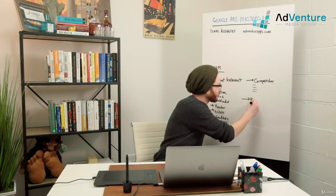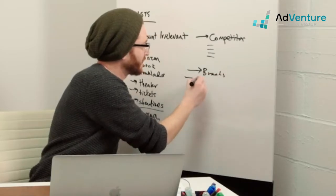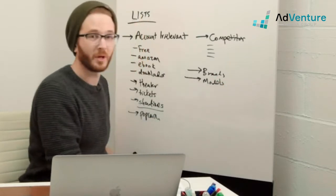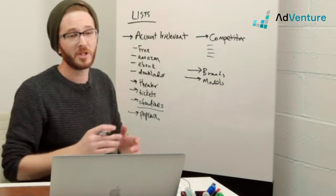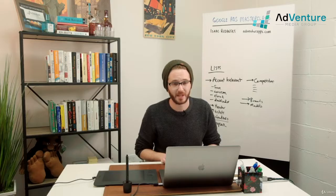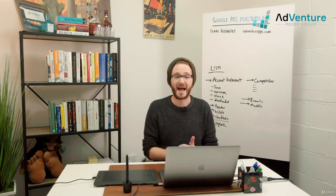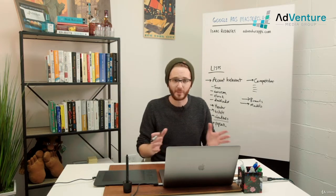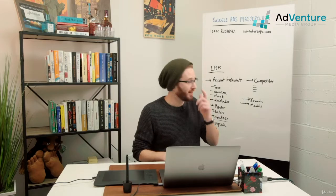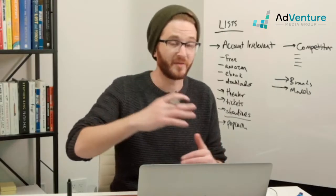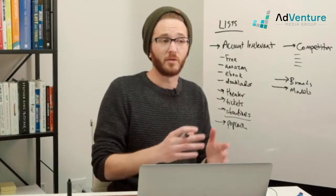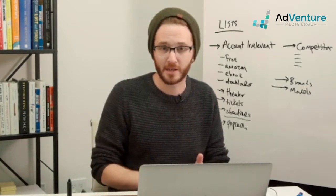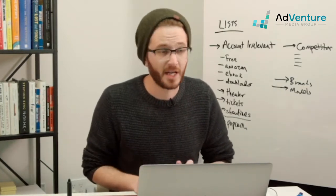You might also have a list of specific brands or a list of specific models as a negative keyword list. I would suggest keeping your negative keyword lists as organized as possible. It's always good to be able to look at your list of negative keyword lists and know what's in them and which campaigns they're applied to, purely for the sake of organization.